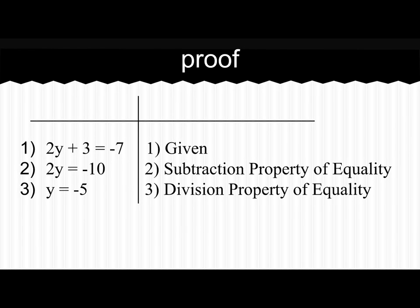And on another proof, the given is 2y plus 3 equals negative 7. Then you would subtract 3 by the subtraction property of equality, and then divide by 2 to get y equals negative 5 for the division property of equality.